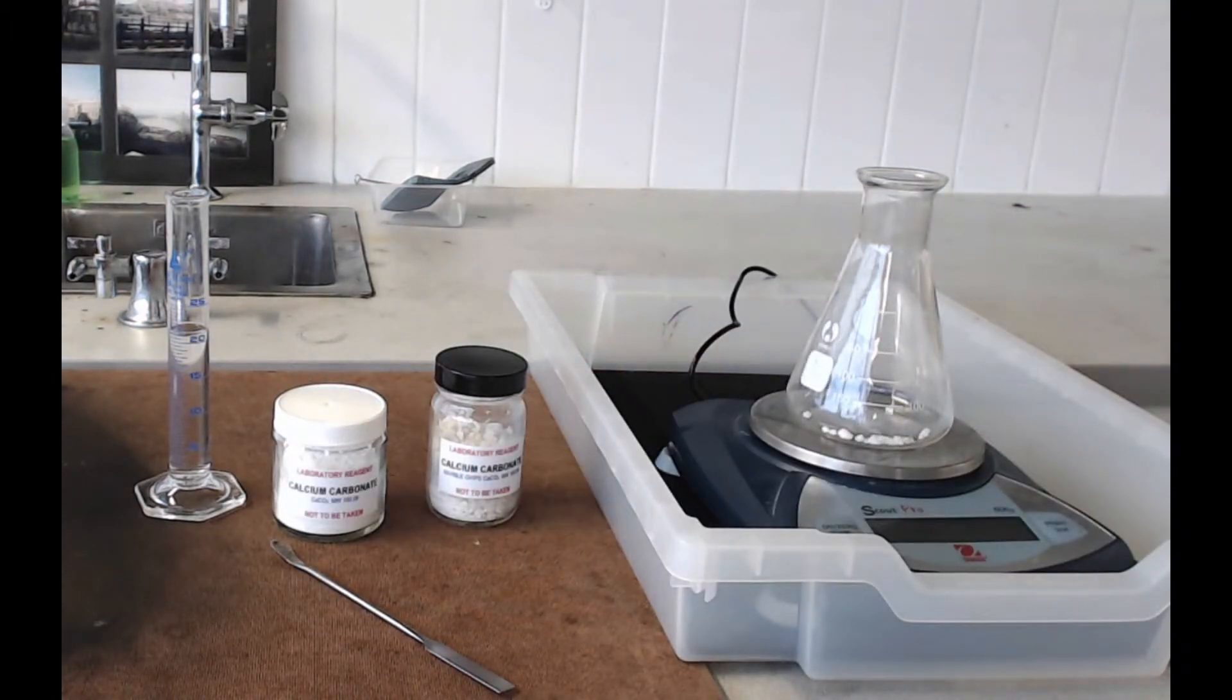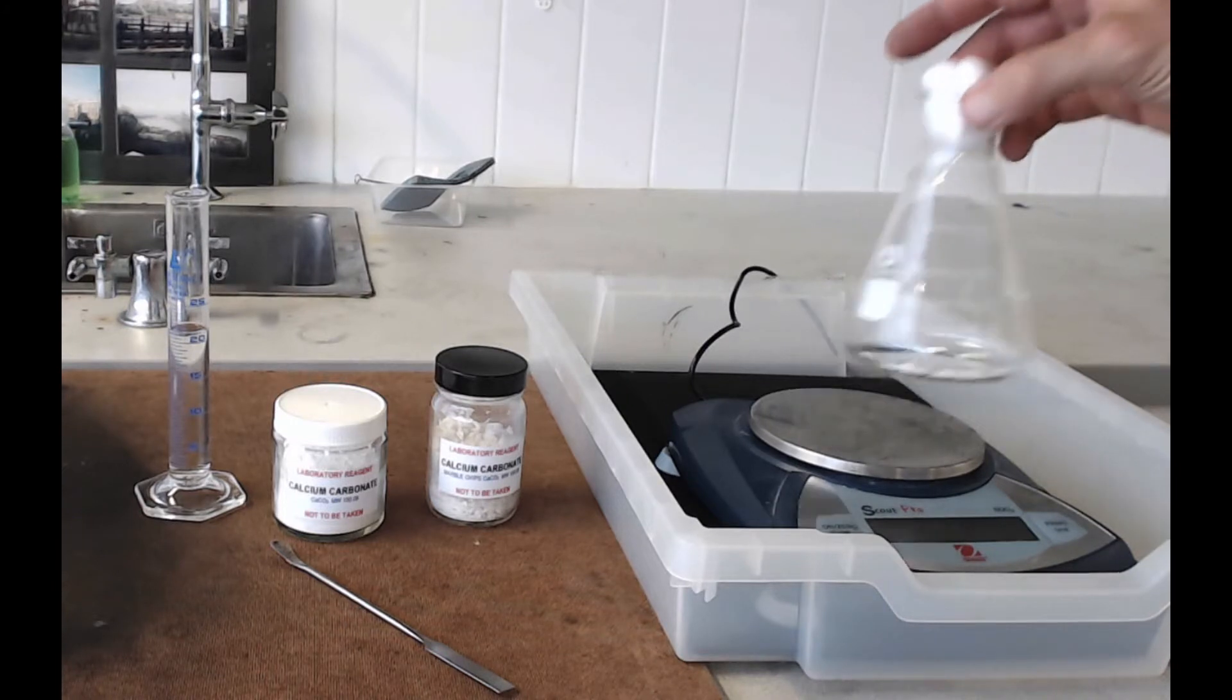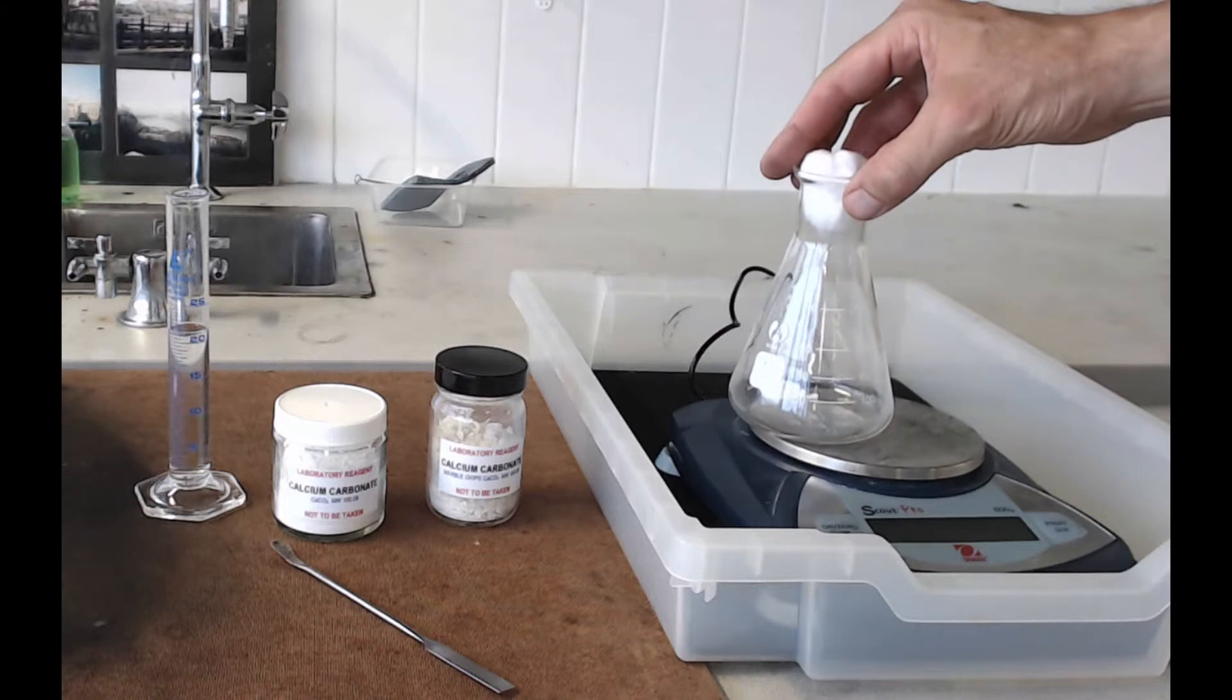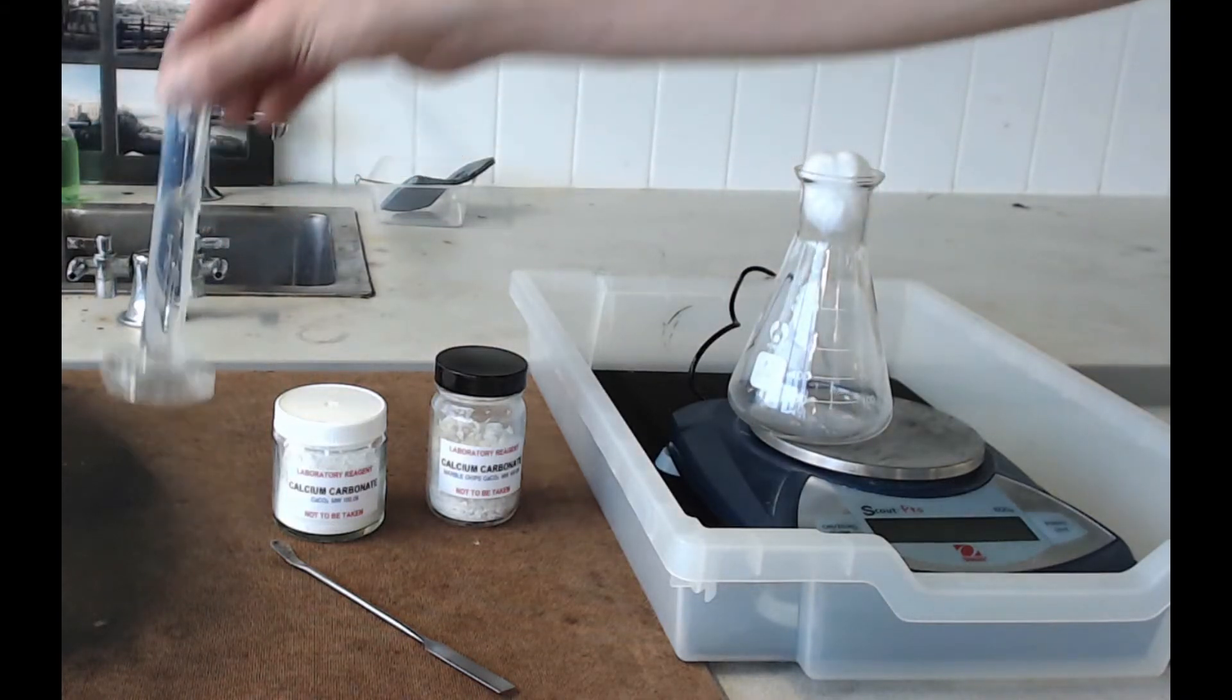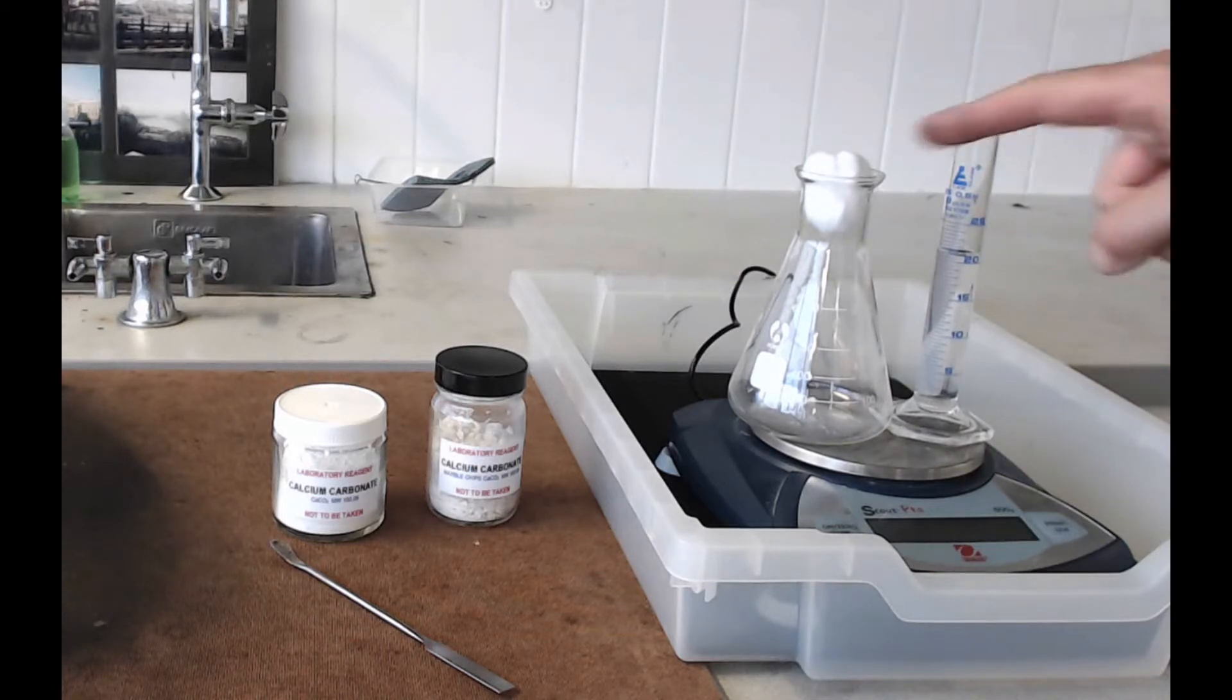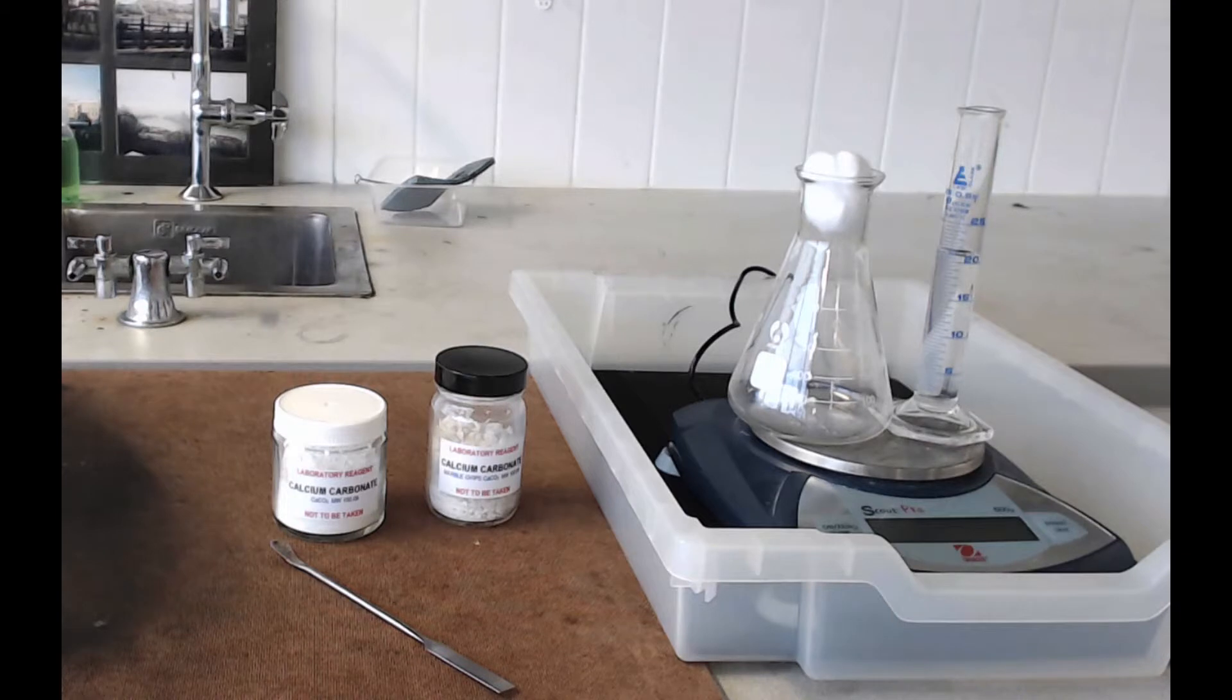Now, the next thing to do is to put your cotton bud on top of the flask. Take the flask off the balance and zero it. What you want to do now is to weigh the measuring cylinder, the conical flask with the marble chips and the acid and the cotton bud all together on the balance. The reaction is going to happen on the balance and you want to monitor the mass that is lost from it.